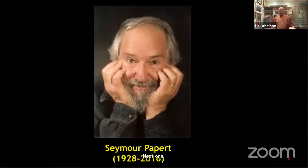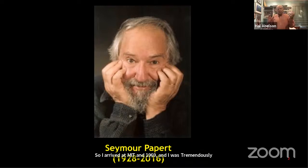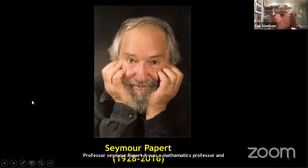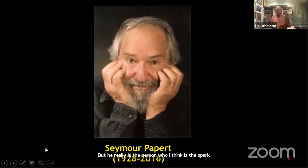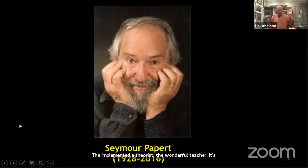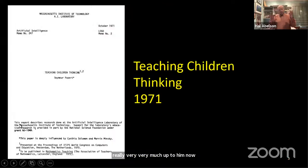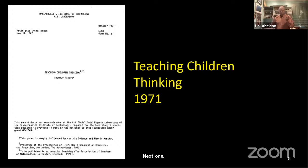I arrived at MIT in 1969 and was tremendously fortunate to run into Professor Seymour Papert, a mathematics professor. It's such a disaster that he's been gone for 15 years now, but he really is the person who I think is the spark that's become everything we're talking about in computational thinking — the implementer, the theorist, the wonderful teacher. And soon after I arrived he published this miraculous paper, which I think is really the genesis of our interest in computational thinking.